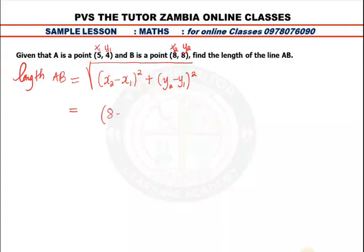So X2 is 8, X1 is 5, we square, plus 8 minus 4, we square. Not to forget the square root.